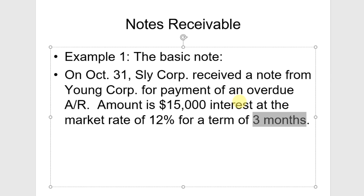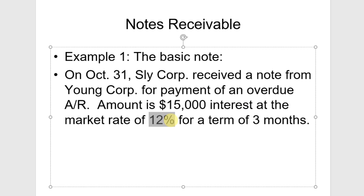So we are going to have to do an adjusting journal entry. It's a $15,000 note and the interest is 12% per year. Interest is always expressed as a yearly rate, so we're going to have to calculate both interest for the full three months and interest for the two months from October 31 to December 31 to accrue interest.